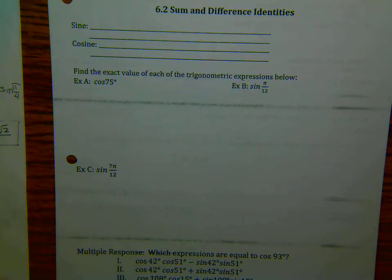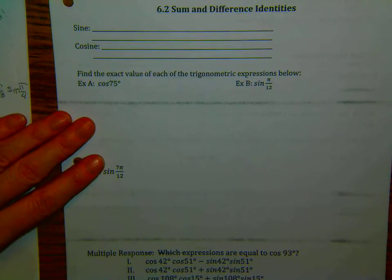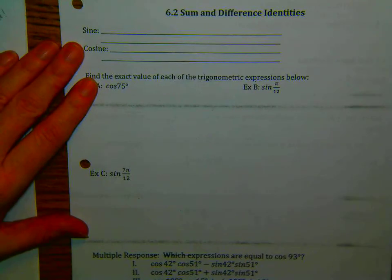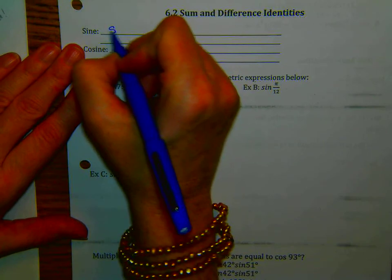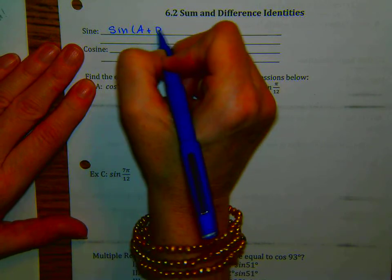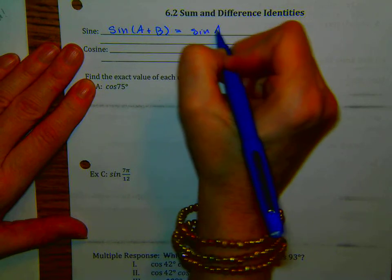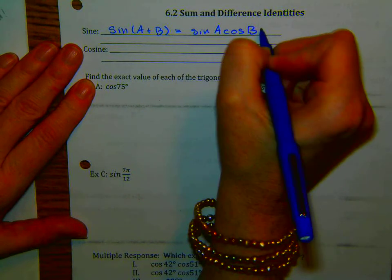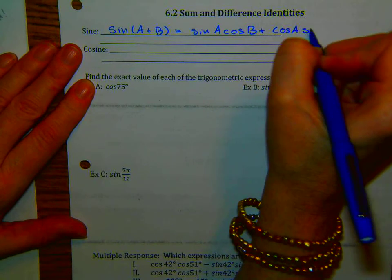Cosine and sine problems with sum and difference identities. Let's get them down first. We have the sine of A plus B is equal to the sine of A times the cosine of B, plus the cosine of A times the sine of B.